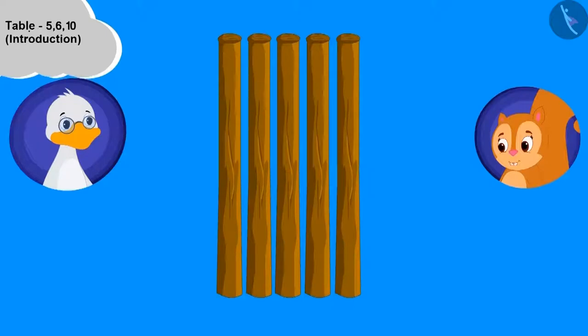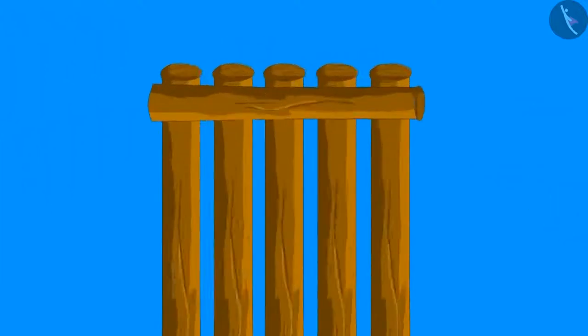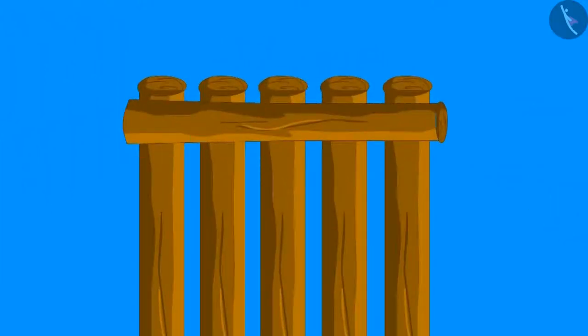Chanda placed 5 wood pieces on the ground like this. Now we will place 1 wood horizontally like this and we will tie a rope at the joints where the horizontal piece cuts the vertical pieces.